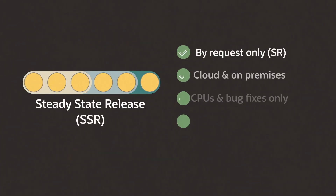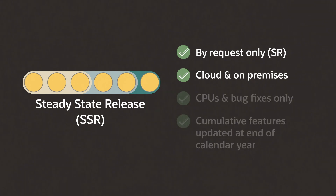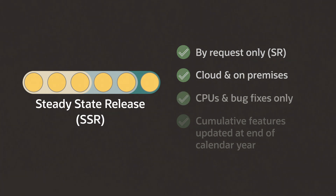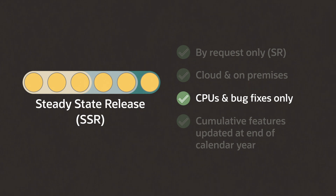The second path is SSR for steady state release. For cloud customers, it's an available option, but it needs to be requested. This release path is also available to on-premise customers. Unlike the LER, monthly releases on this path won't include any new application features, but it will keep you up-to-date with bug fixes and CPUs.